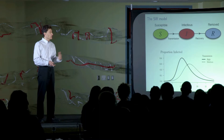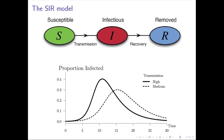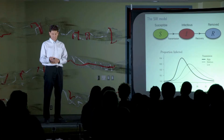At a somewhat lower transmission rate, there's a shallower rise and it doesn't infect quite so many people. And for a much lower transmission rate, it's a much shallower climb and doesn't get to the same height.